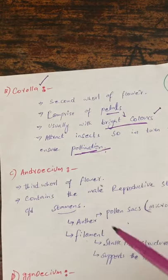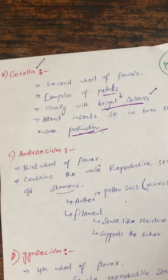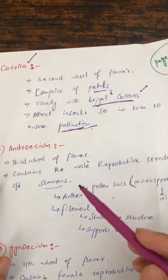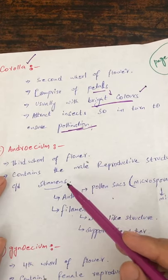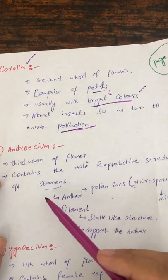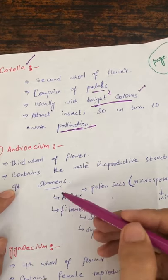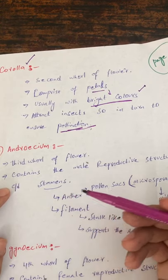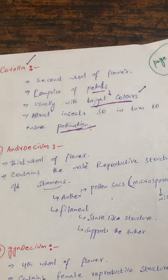The next one is known as the androecium. The androecium is the third wall or ring of the flower. It contains the male reproductive structures called the stamen. The stamen is made up of different parts, which we will now read.